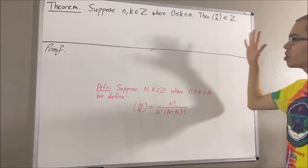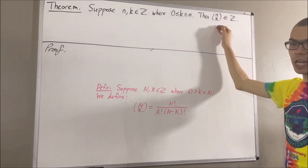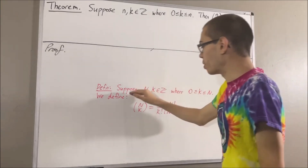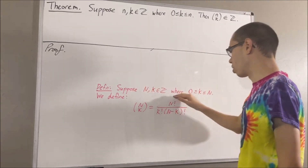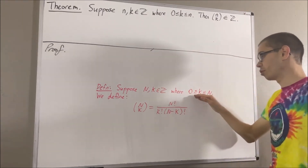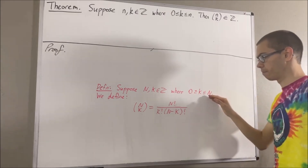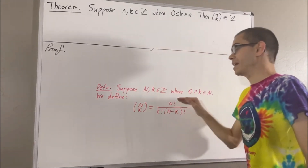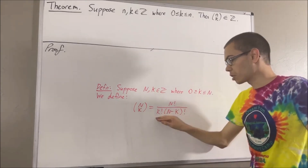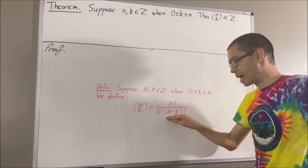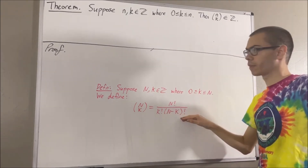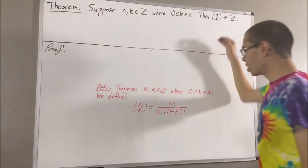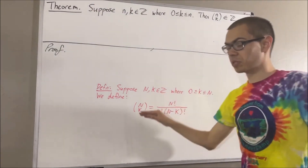Now, let's remind ourselves the definition of n choose k. Suppose n and k are integers where 0 is less than or equal to k is less than or equal to n. We define n choose k to be n factorial over k factorial times n minus k factorial. In proving this theorem, we are going to use two properties of n choose k.